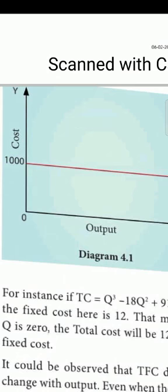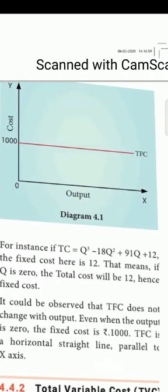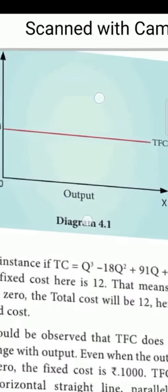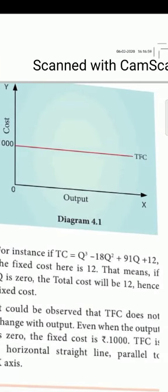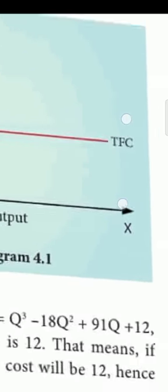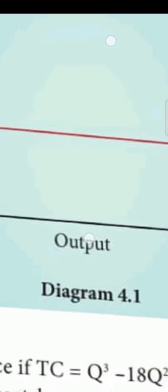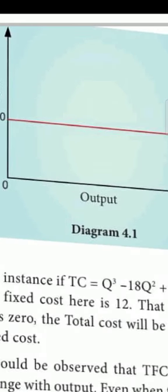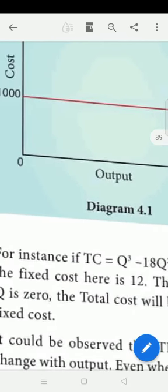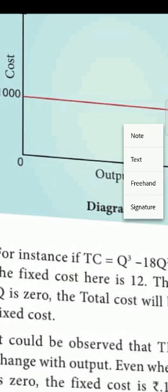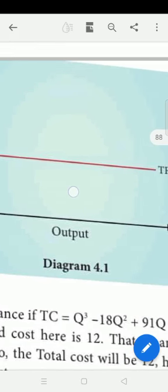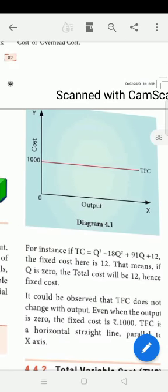The total fixed cost line is parallel to the x-axis — it does not change with output. The fixed cost line is horizontal and parallel to the output axis. This is the total fixed cost curve.